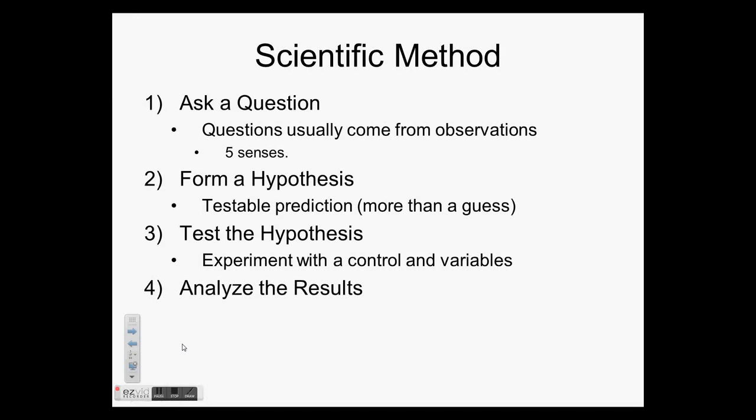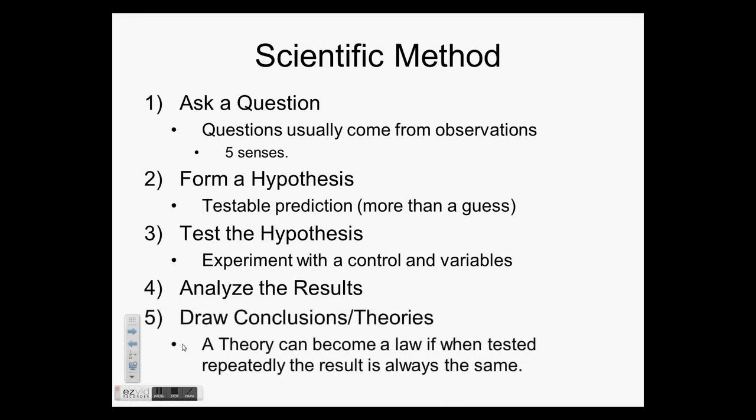After you test your hypothesis, you're going to analyze the results. Hopefully they are going to match and support your hypothesis, but that's not always the case. Let's say that they do. Let's say the results do match your hypothesis. Then you can draw your conclusion or develop your theory. It's kind of basically that you were right. And a theory can actually become a law if, when tested repeatedly, the result is always the same, like the law of gravity or Newton's laws of motion. If the theory can be tested over and over and over again and is always correct, it can become a law.